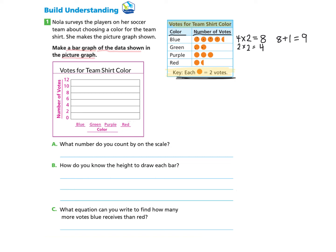Then we take a look at purple. Purple has one, two, three. So we can count by twos or we can multiply three two times, which gives us six.